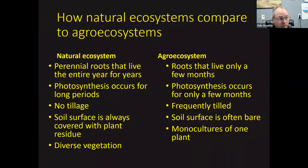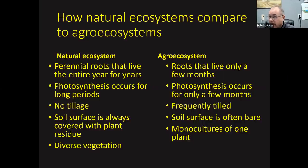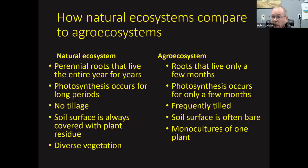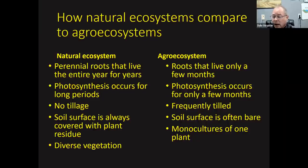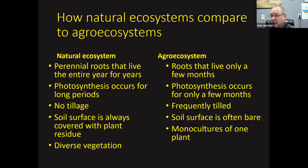What are the differences? In a natural ecosystem, you've got roots that live the entire year for several years — long photosynthesis. There's no tillage, soil surface is always covered, and there is a diversity of vegetation — not just one plant species but many plant species in multiple layers. In contrast, our agricultural ecosystems have roots that live only a few months, photosynthesis occurs for only a few months, about 70% of the world's cropland is still tilled, soil surface is bare for much of the year, and it's monocultures — one species of plant grown at a time.